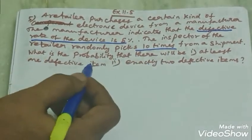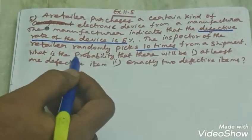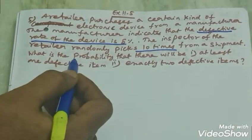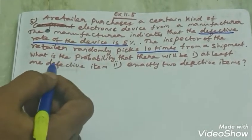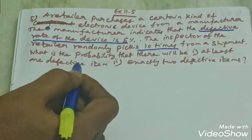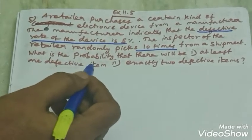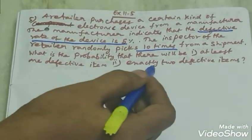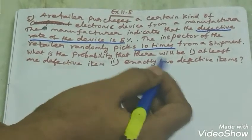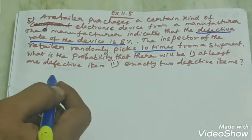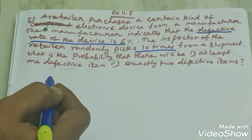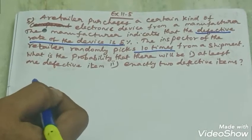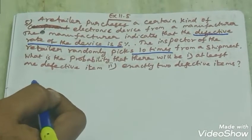What is the probability that at least one item from the 10 items is defective, and exactly two defective items are defective?